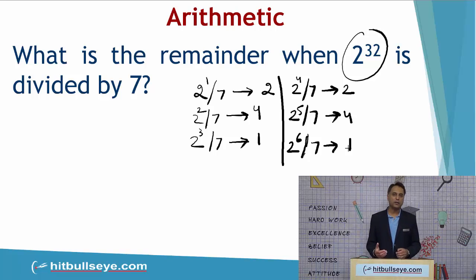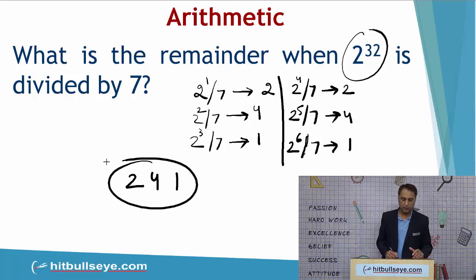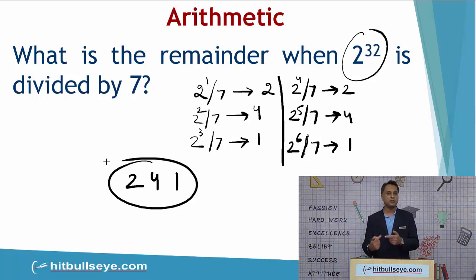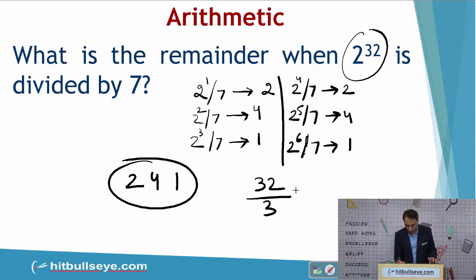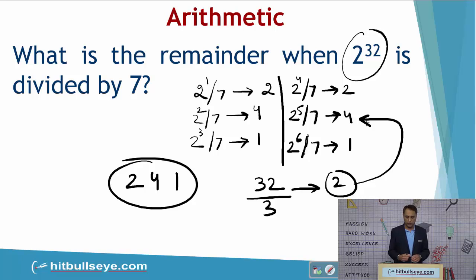A pattern emerges: 2, 4, 1 — repeating in sets of 3, in triplets. Therefore, to find the remainder when 2 to the power 32 is divided by 7, you simply divide the index 32 by 3, since the repetition happens in sets of 3. Dividing 32 by 3 gives a remainder of 2, which means you are at the second level of the series 2, 4, 1 — so the actual remainder when 2 to the power 32 is divided by 7 is 4.